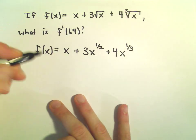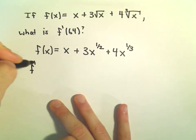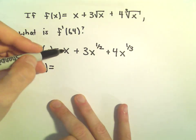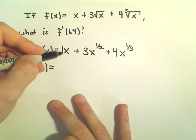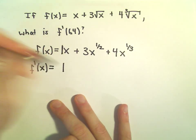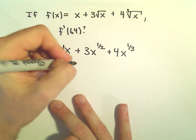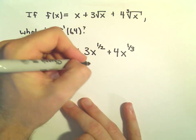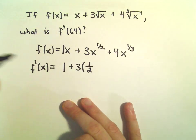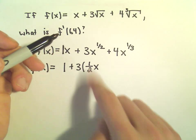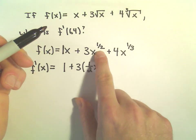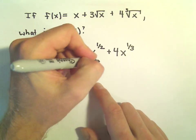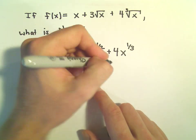Now I'm going to take the derivative, and once I take the derivative we'll just plug in our value. So f prime of x — the derivative of 1x is just positive 1. The 3 comes along, the derivative of x to the 1 half: the 1 over 2 comes out front, we leave the x alone, and then we subtract 1 from our exponent. So 1 half minus 1 gives us negative 1 half.